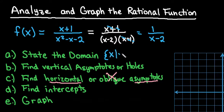is x cannot equal positive 2 or x cannot equal negative 1. Because if I solve both of these for 0, 2 minus 2 would give me 0 and negative 1 plus 1 would give me 0. So our domain is that x cannot equal 2 or x cannot equal negative 1.